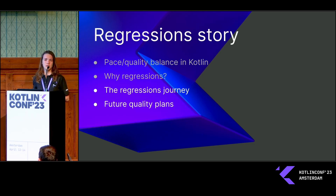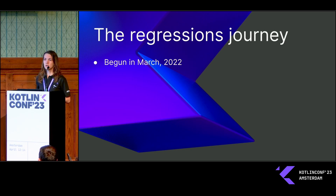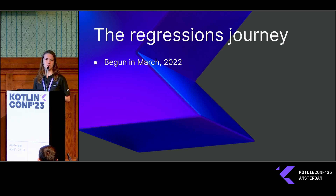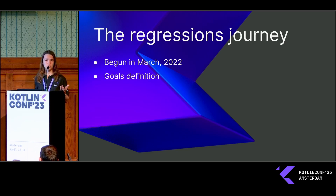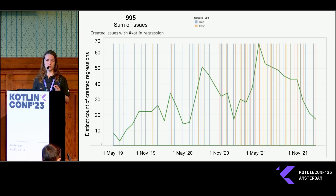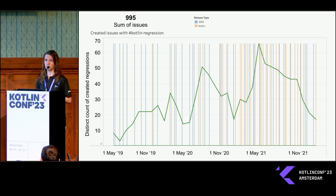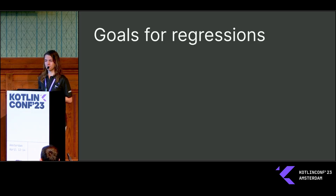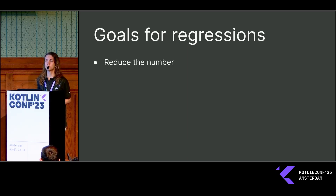Therefore we need to eliminate regressions to eliminate the probability of a hotfix release. In 2022 we decided that we need to fight regressions specifically — we didn't have any specific process for the entire team before that. We began with goal definition and evaluated where we were, taking the history of three years of regressions. You can see the graph, and the trend is not really encouraging.